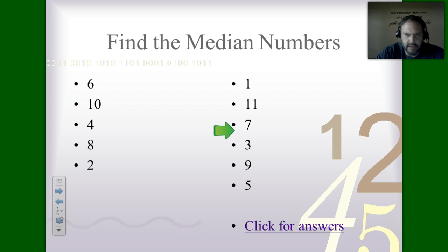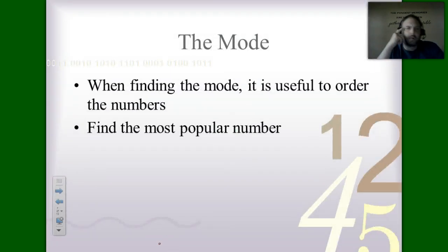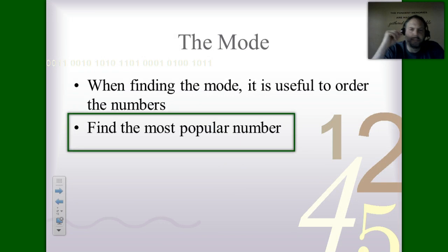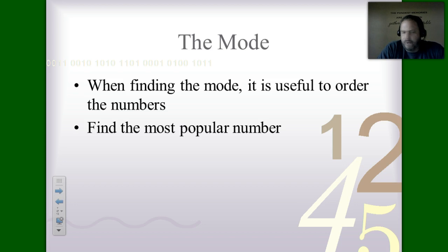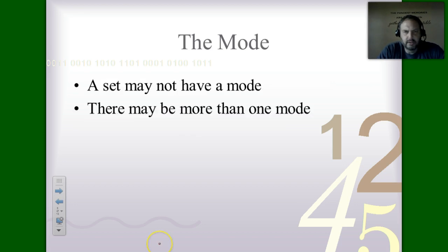Mode is Mr. Popular! When finding the mode it's often useful to order the numbers — you don't have to, but it makes things easier to spot. We're looking for Mr. Popular or Miss Popular in a data set. A set may not have a mode, or there may be more than one mode.